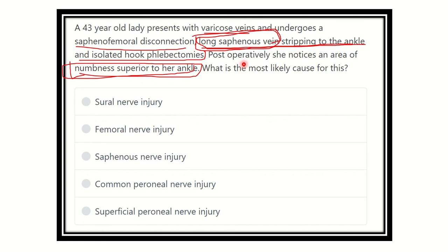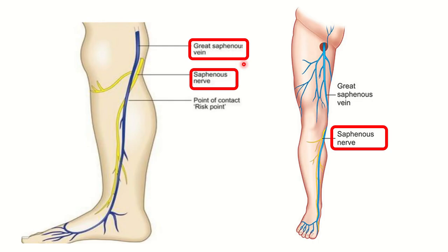Looking at the pictures, it is very clear which nerve is close to the long saphenous vein. Here we can see the great saphenous vein — also called the long saphenous vein. In the second picture, we can also see the long saphenous vein. It arises from the dorsum of the foot and passes